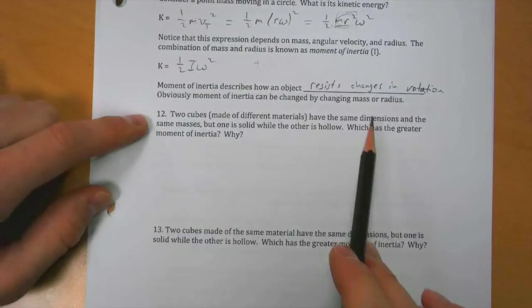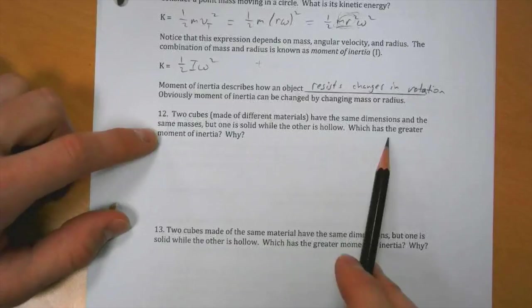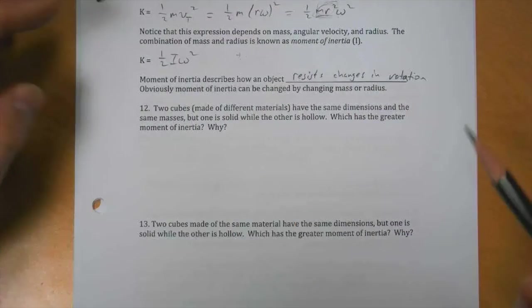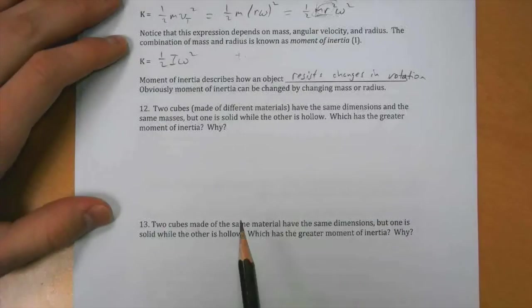So think about this. We've got two cubes, the same dimensions and same masses, but one is solid while the other is hollow. Which has the greater moment of inertia? Think about that for a second, see if you can come up with an answer and reasoning on your own. Maybe pause the video.